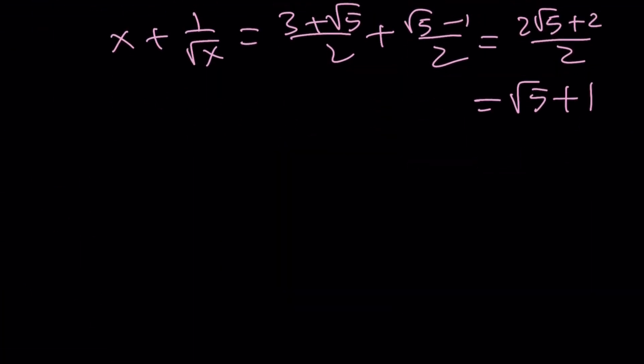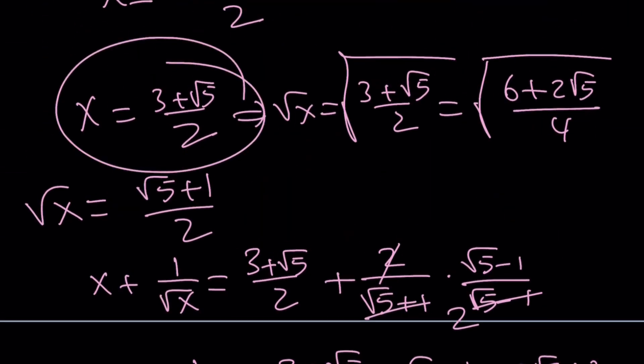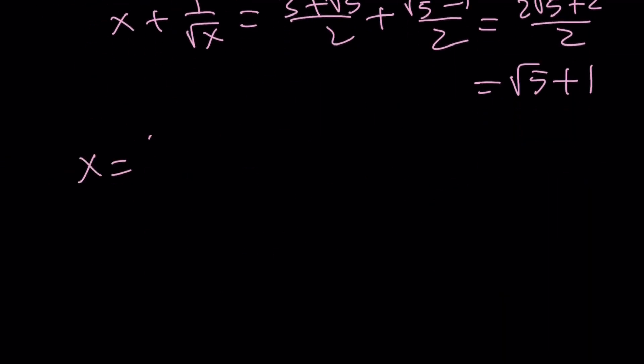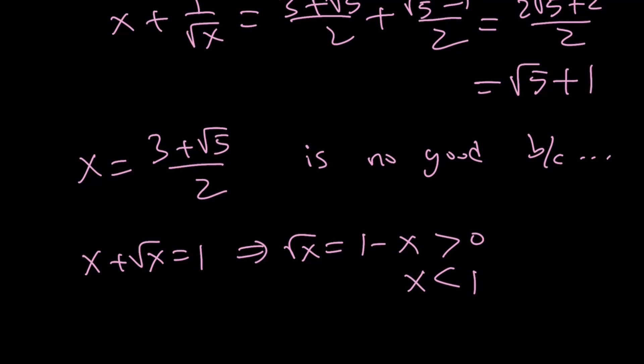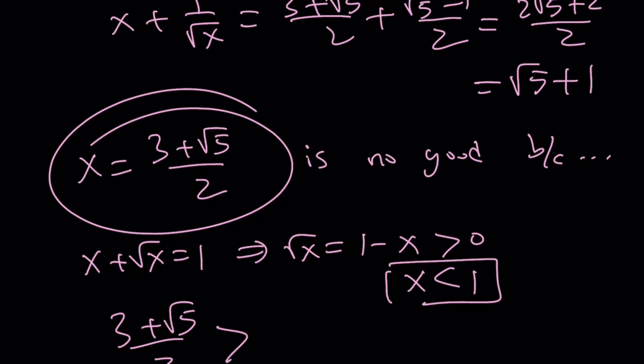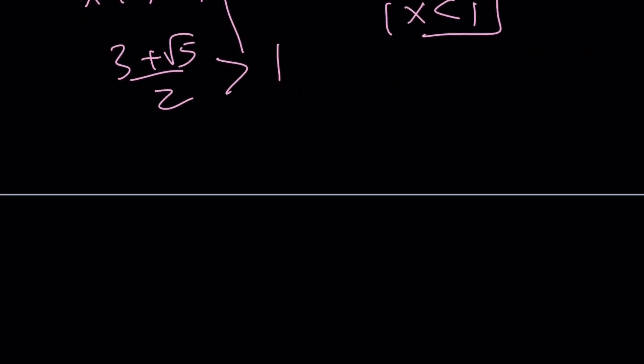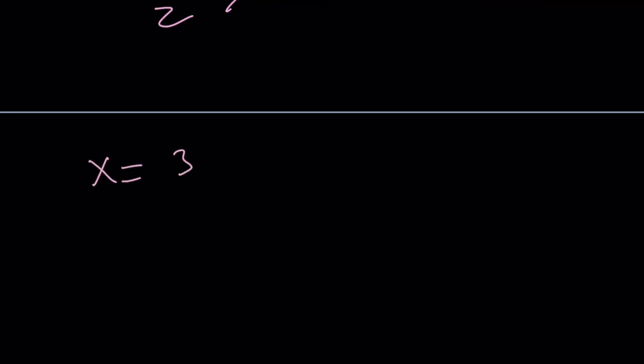All right. So here's the problem. Why x equals this is not a good solution. I'm going to go ahead and explain that to you now. So x equals 3 plus root 5 over 2 is no good because I'm going to explain that right now. Remember, in our original problem, we had x plus root x equals 1. And from here, root x equals 1 minus x. Root x is positive. Therefore, 1 minus x is positive. Therefore, x is less than 1. But this number is not less than 1. 3 plus root 5 over 2 is greater than 1. And I think you're going to agree with me on that, right? Hopefully. So this solution is disregarded or discarded or trash, whatever. It doesn't work. Who cares?